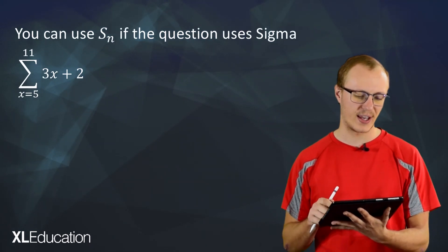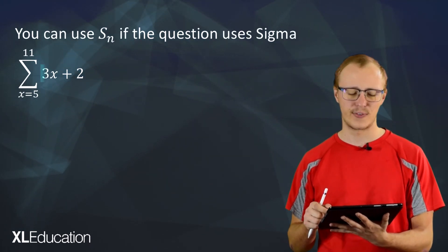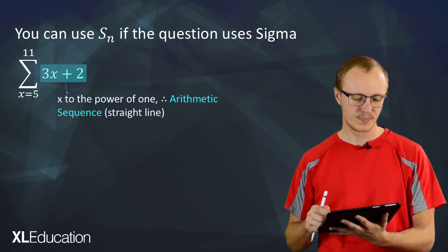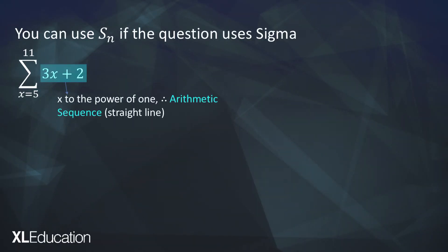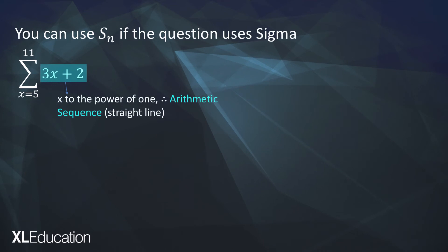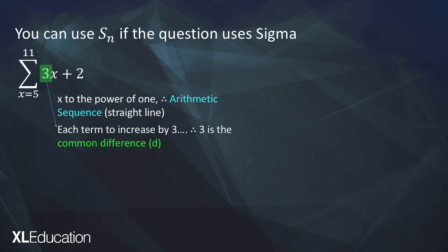So let's see we've got the sigma there of x equals 5 to 11 of 3x plus 2. That 3x plus 2 our function has a highest power of x that is equal to 1, which means we're dealing with an arithmetic sequence. It's linear straight line. That 3 there is what the x is multiplied by, so that means going from one term to the next we're going to have a constant difference of 3. So d our constant difference is equal to 3.